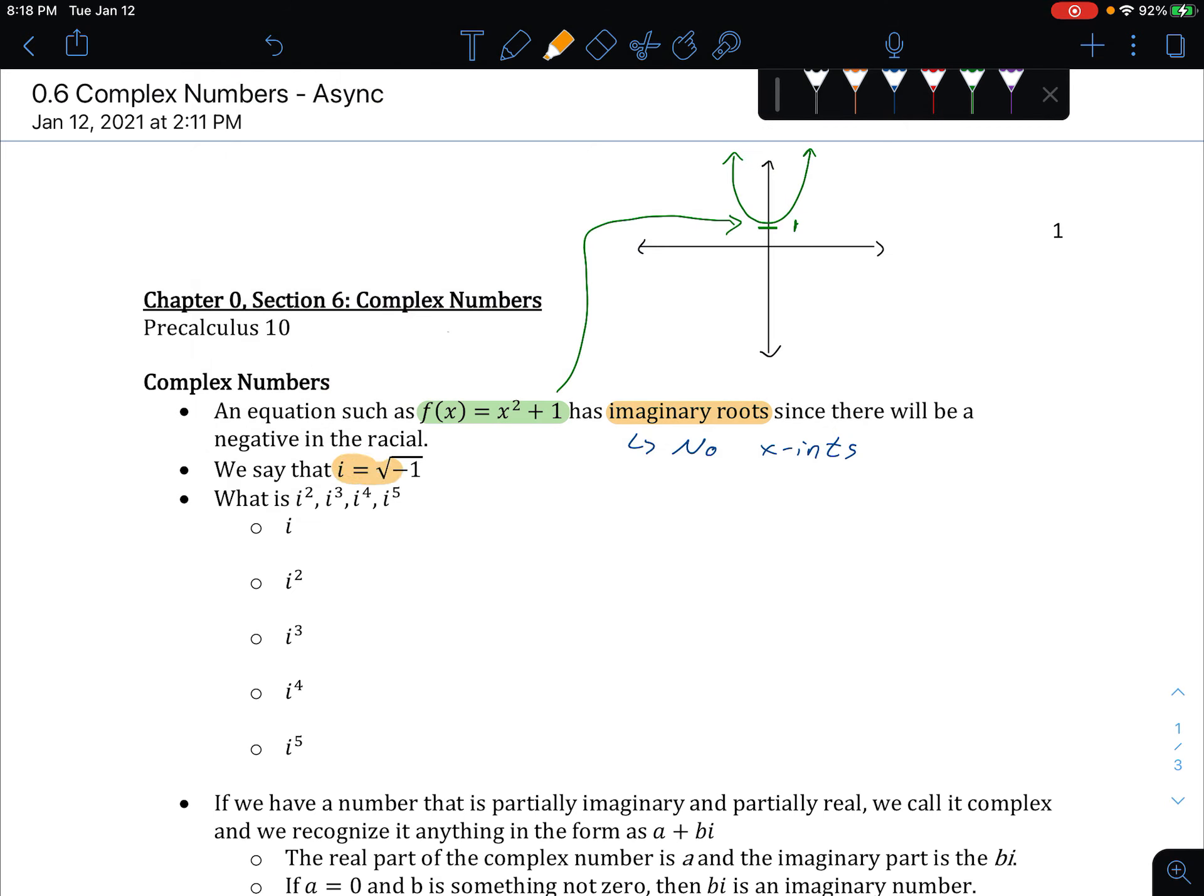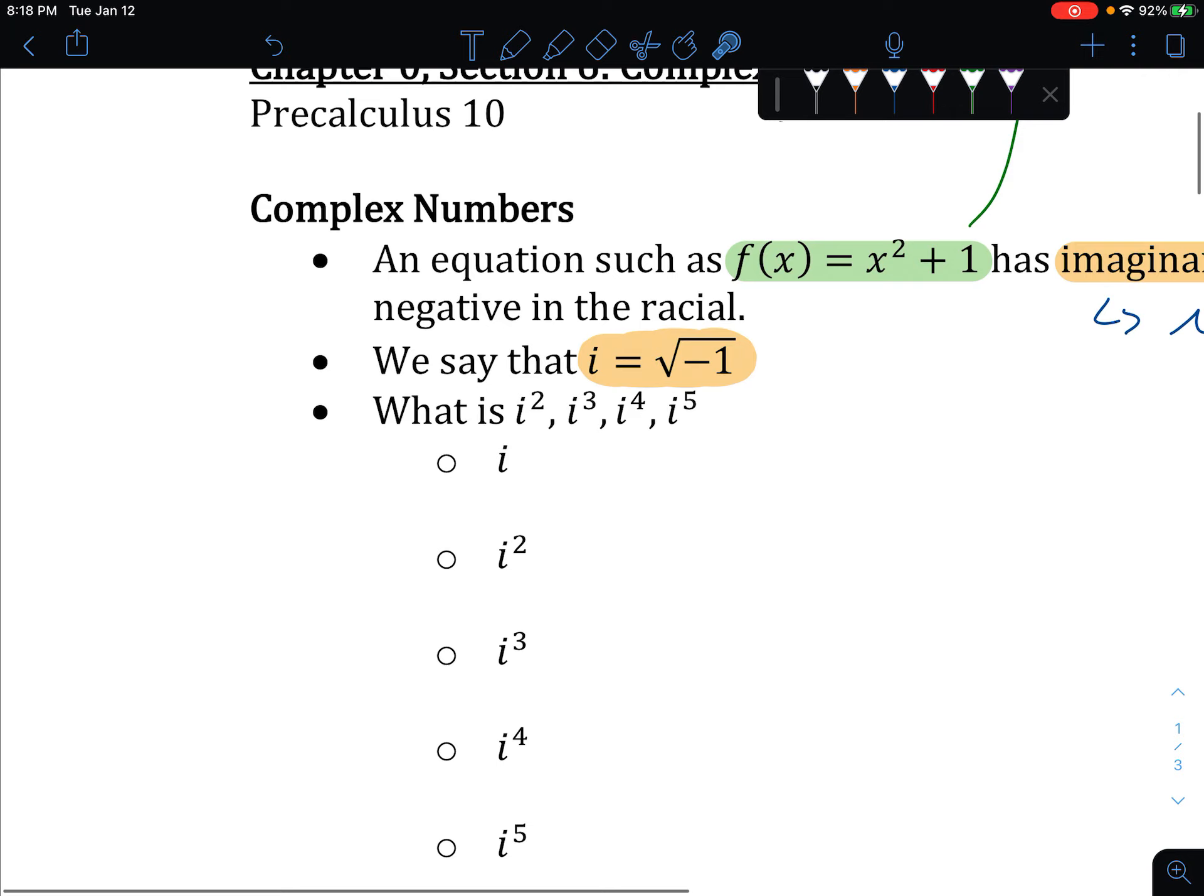We start by defining i to be √(-1). So literally just a negative in the radical can come out as an i. So if I do a little side note to the side, square root of 49, we know that would just be 7.